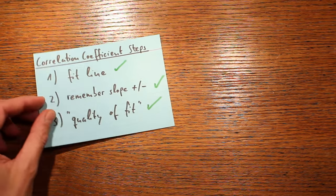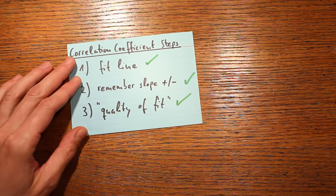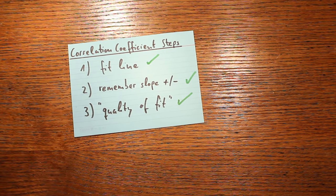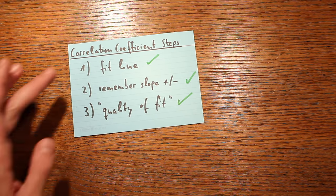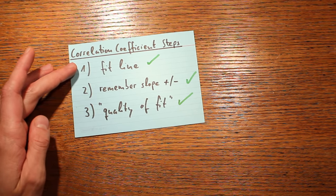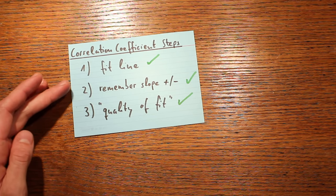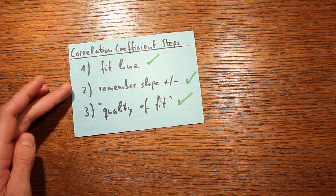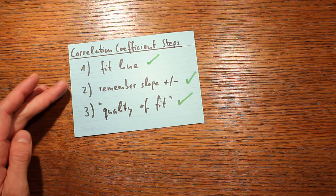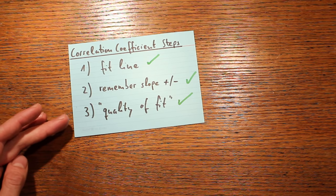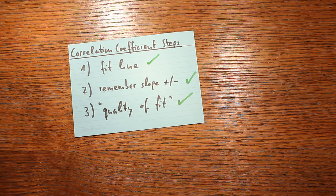So those are the three steps of the correlation coefficient. First, fit the straight line. Second, remember if the slope is going up or down to get the sign of the coefficient. Third, get the magnitude by comparing the scatter along the y-axis against the scatter around the fitted line.